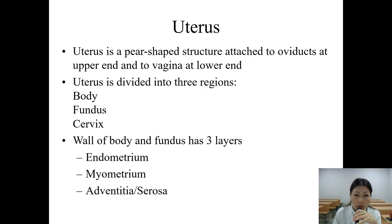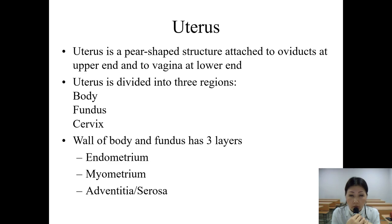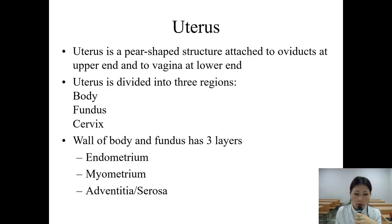Good day, dear students. We will continue our previous lecture on the female reproductive system. We were stopped on the uterus and will continue from this topic. The uterus is the pear-shaped structure attached to oviducts at the upper end and vagina at the lower end. The uterus is divided into three regions: body, fundus, and cervix.